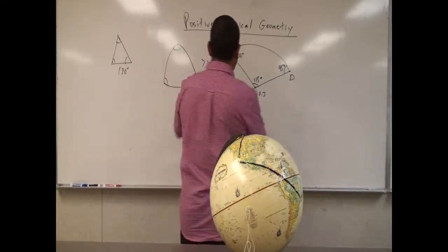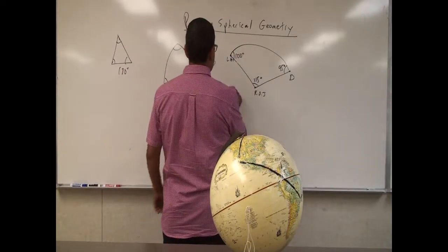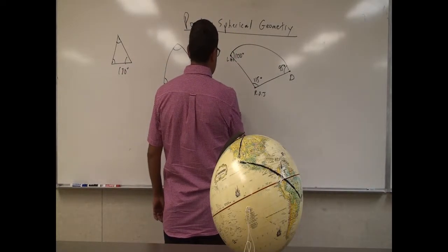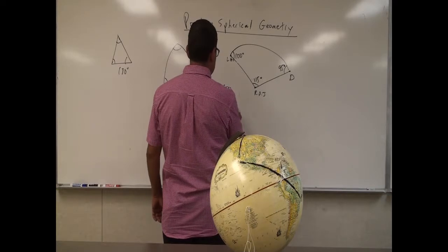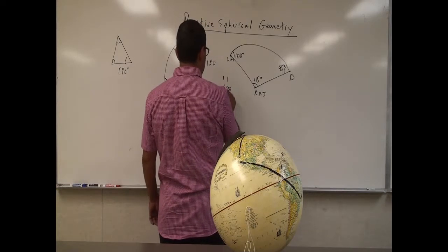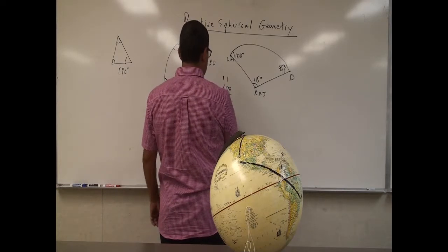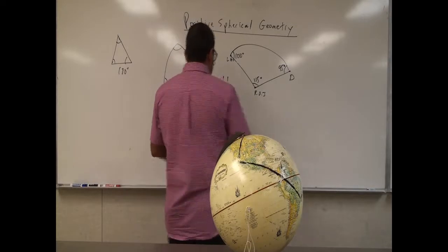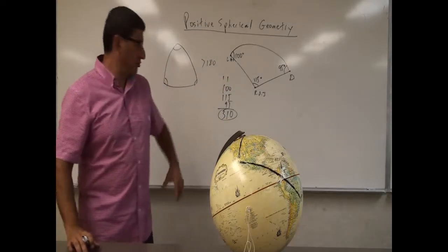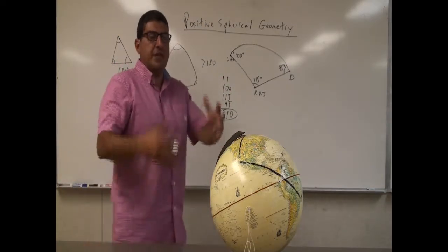If you add these up — 100 plus 115 plus 95 — it already looks obviously greater than 180. It's 310 degrees. Because of the curvature of a positively curved surface, the lines themselves are curved, and so when you make a triangle out of them, the angles add up to more than 180.